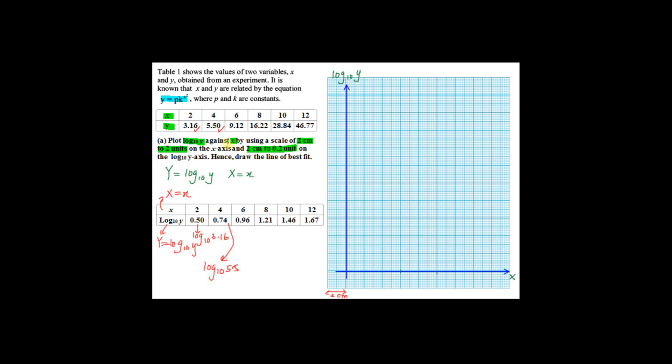So for the x-axis here, you have to use 2 cm to 2 units. Look at the value of x. You have to draw from 2 to 12. So 2 cm here is 2 cm. So you have 0, 2, 4, 6, 8, 10, 12, 14.